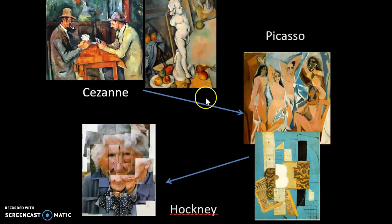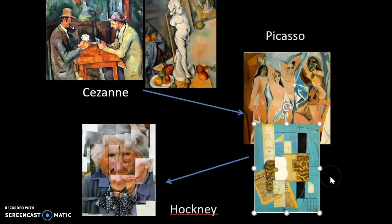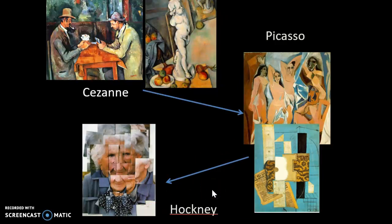Cézanne actually influenced Picasso. Here you can see two of Picasso's images, and you can really see how Picasso is breaking things down into really flat, geometric kinds of planes. You can then see Picasso's influence on Hockney — that one simple subject matter, but broken up into different planes and looking at it from some different angles.